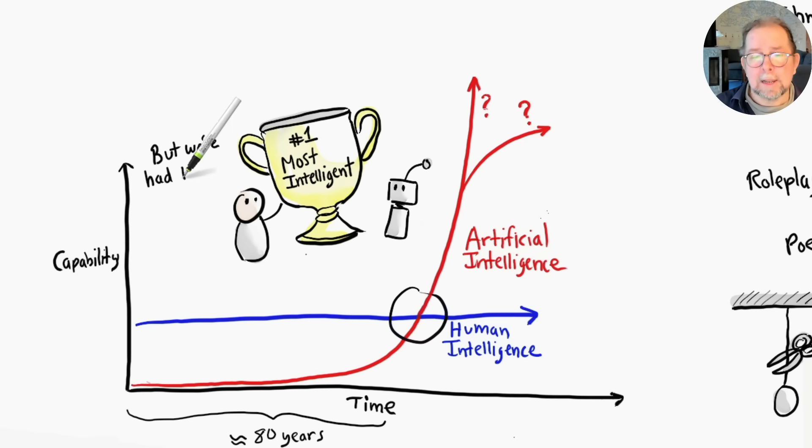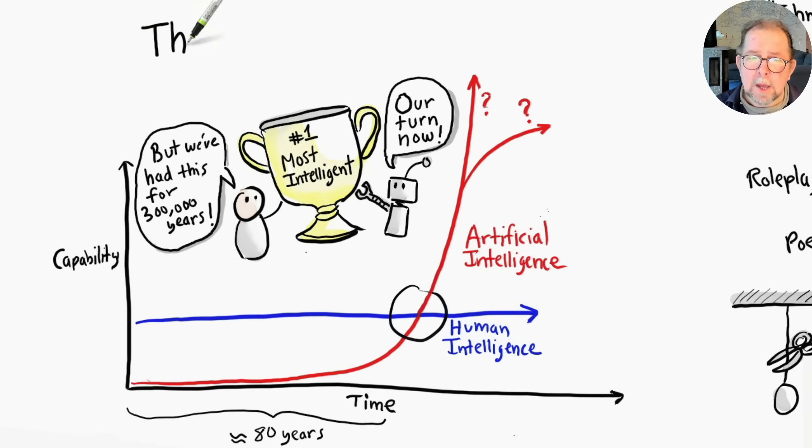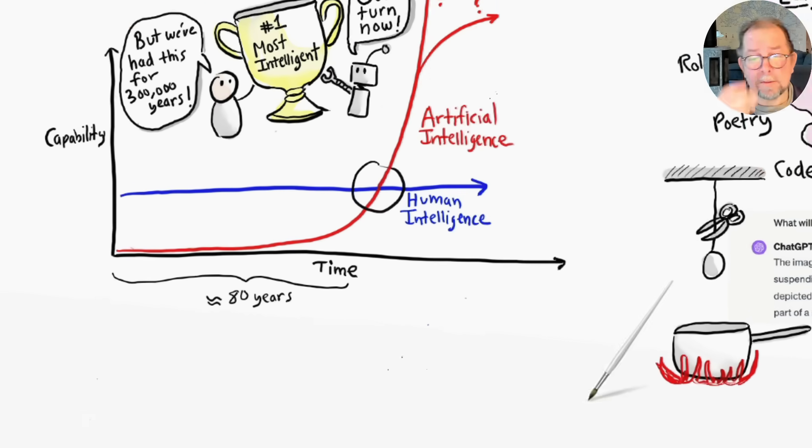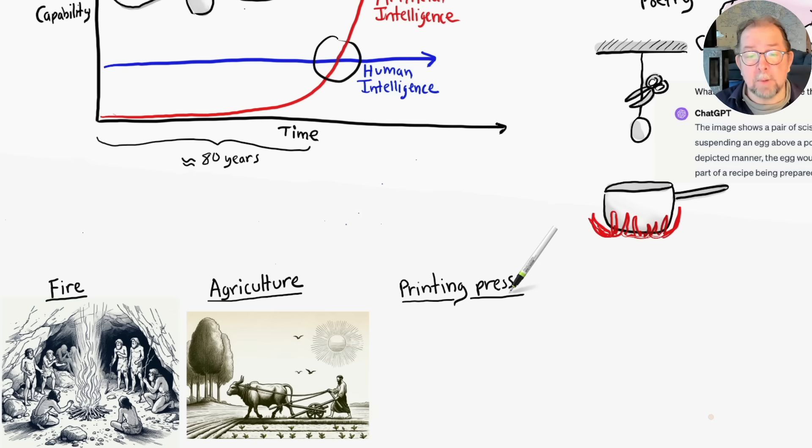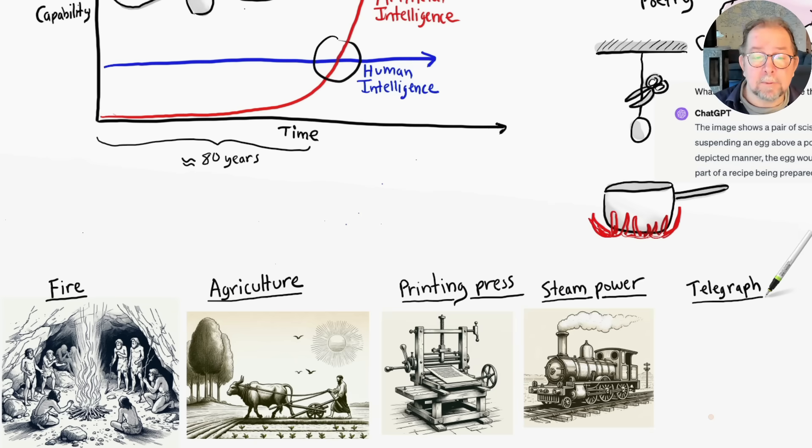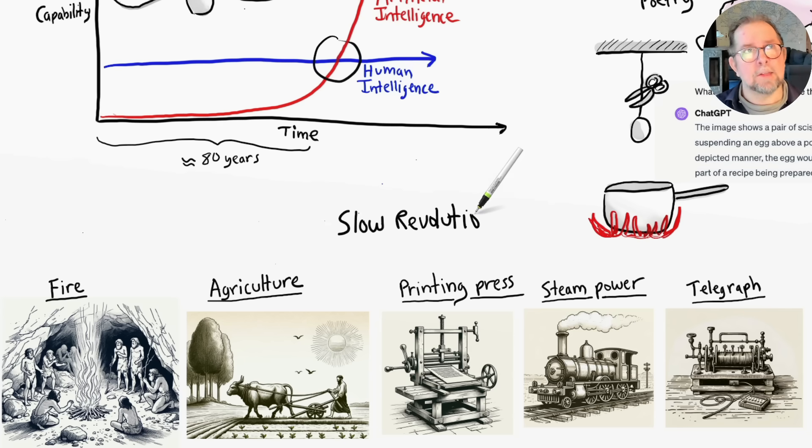Now, this isn't the first revolution we've experienced. We tamed fire, we learned how to do agriculture, we invented the printing press, steam power, telegraph—these were all revolutionary changes, but they took decades or centuries to become widespread. In the AI revolution, new technology spreads worldwide almost instantly. Dealing with this rate of change is a huge challenge for both individuals and companies.